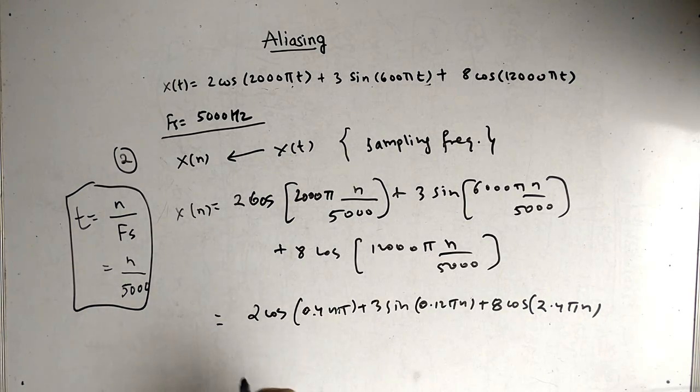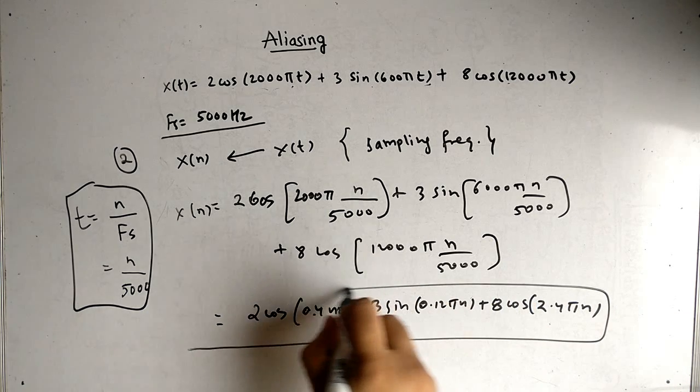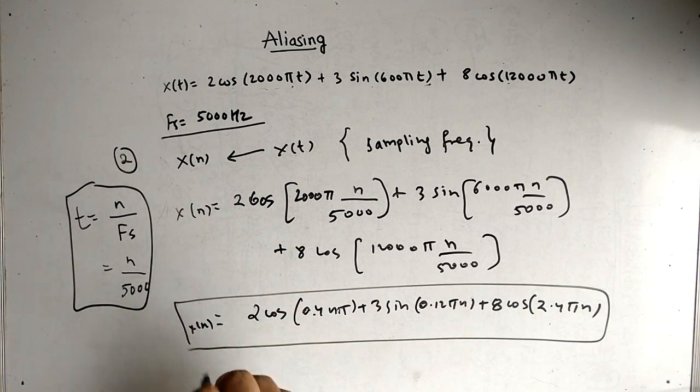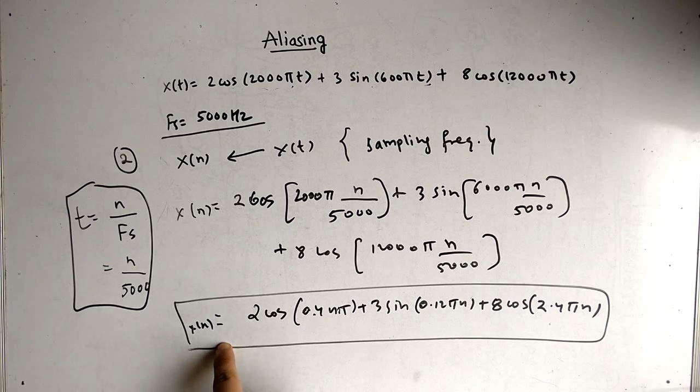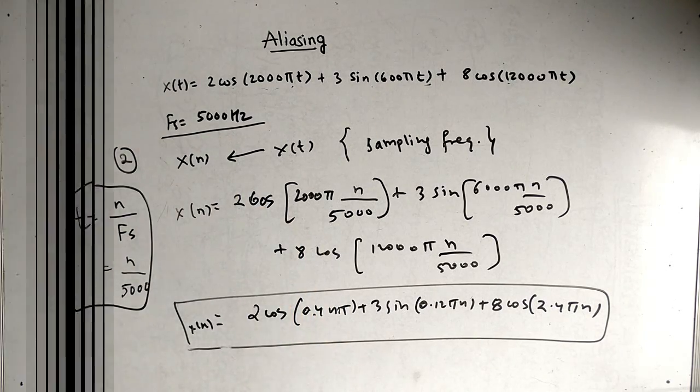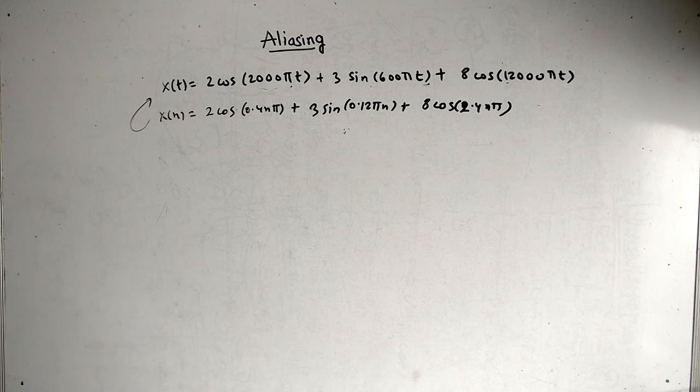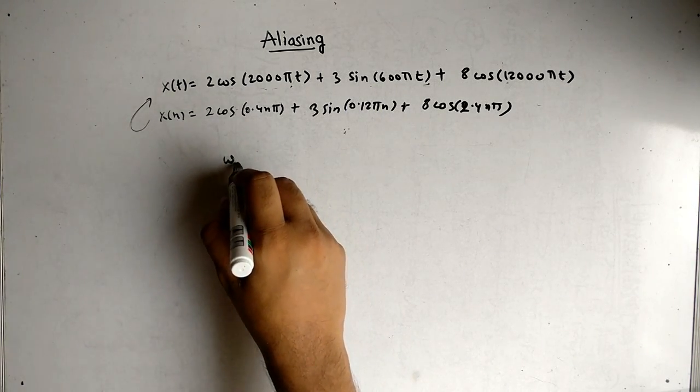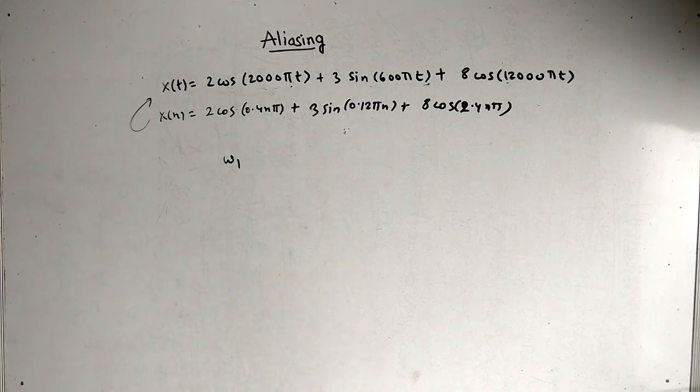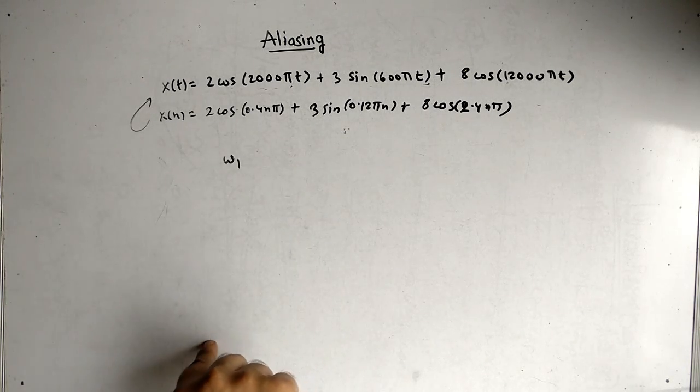Now you can see the final answer is in terms of n and we have converted x(t) to x(n) using this sampling frequency fs. Now the question is we have to reconstruct x(n) back to x(t). But the problem is during reconstruction we have the range of omega between minus pi to pi.